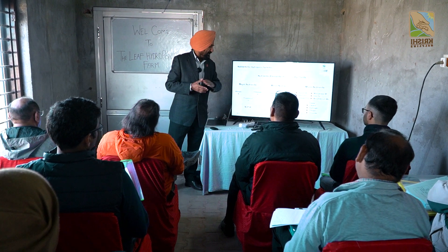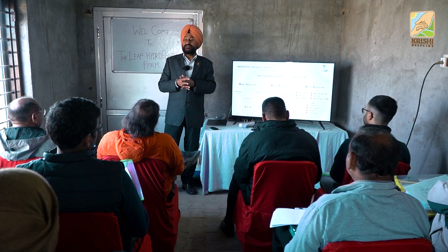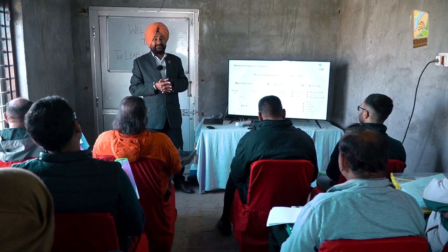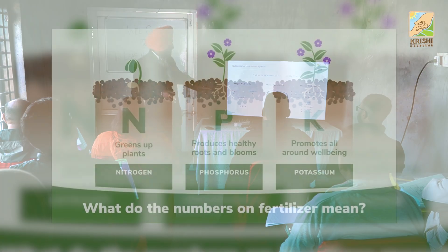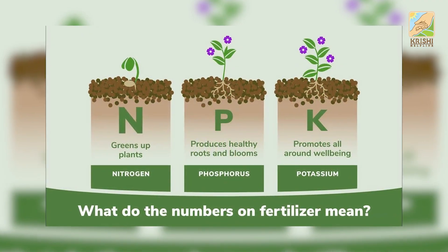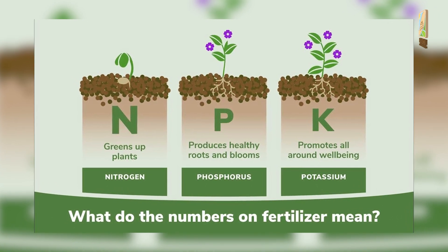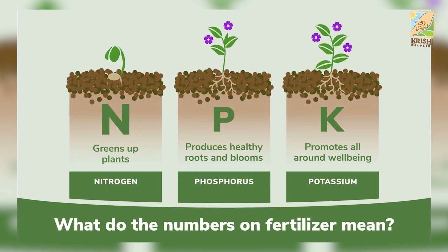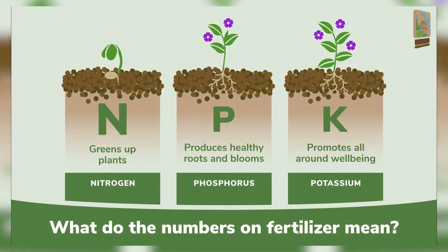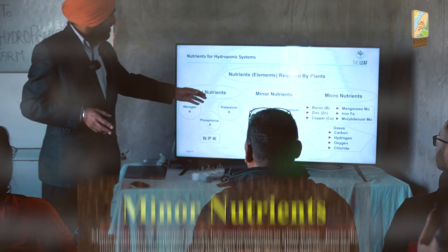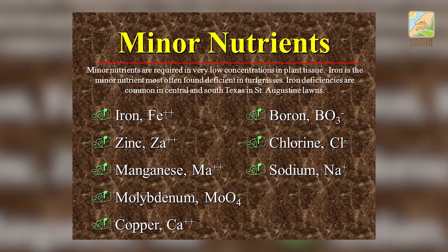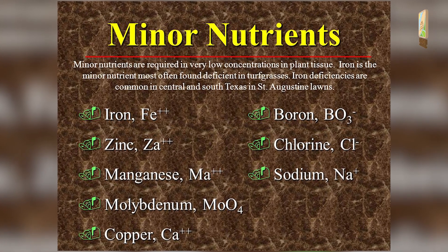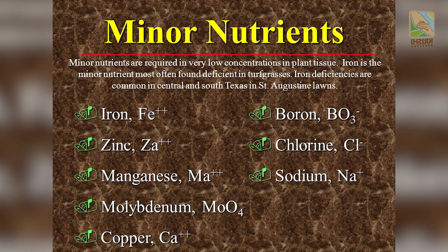Then there are some minor nutrients, required by the plant but not in very large quantities. Nitrogen is required — it is a body-building element. Potassium is required for transfer of energy: adenine triphosphate, adenine diphosphate, and all these things. Minor nutrients are required but in a lesser quantity than the major nutrients.